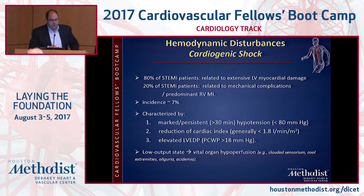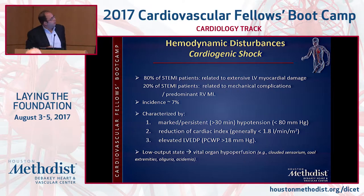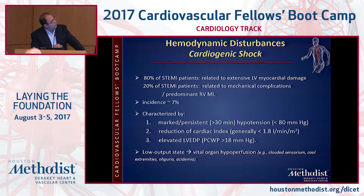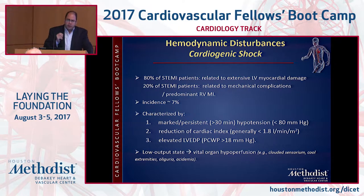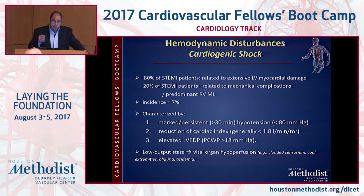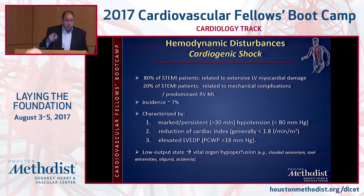Eighty percent of cardiogenic shock is related to pump failure and 20 percent to mechanical complication or isolated right ventricular MI. Two-thirds to three-fourths of cardiogenic shock occurs in-hospital — so often these patients do not present with cardiogenic shock but develop it due to delay in revascularization, iatrogenic beta-blocker use, or incomplete revascularization.